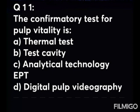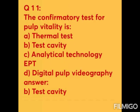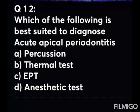Question 11: The confirmatory test for pulp vitality is — Option A: thermal test. Option B: test cavity. Option C: analytical technology of EPT. Option D: digital pulp videography. The answer is Option B — test cavity. It is performed when other methods of diagnosis have failed. The tooth must be un-anesthetized and the procedure done at high speed with a water coolant.